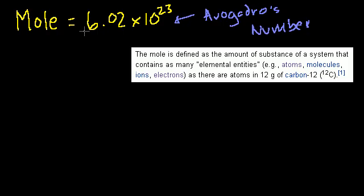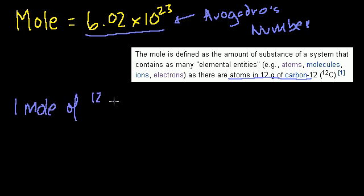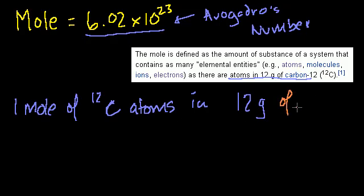Well, I just told you that a mole is 6.02 times 10 to the 23. So if you just take the last part, atoms in 12 grams of carbon-12, that means that there are 1 mole of carbon-12 atoms in 12 grams of carbon.